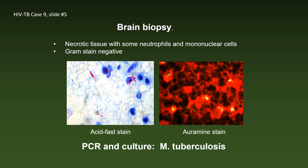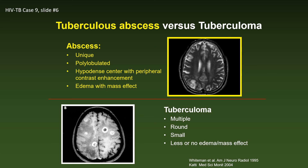The diagnosis was established by brain biopsy. The neurosurgeon found necrotic tissue with some neutrophils and mononuclear cells. Gram's stain was negative, but the acid-fast stain and auramine stain revealed likely MTB, confirmed by culture. Tuberculous abscesses must be distinguished from tuberculoma. An abscess is usually unique, pauciloculated, has a hyperdense center with peripheral contrast enhancement and edema with mass effect. In contrast, tuberculomas are usually multiple, round, small, and have less or no edema or mass effect.